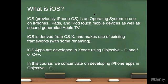So first of all, what is iOS? iOS, who was previously called iPhone OS, is an operating system that is used on iPhones and iPads and iPod touch mobile devices, and it's also used on the second generation Apple TV. It's derived from OS X and it makes use of some of the existing frameworks in OS X, with some renaming, but basically iOS is a version of OS X made to run on touch devices.